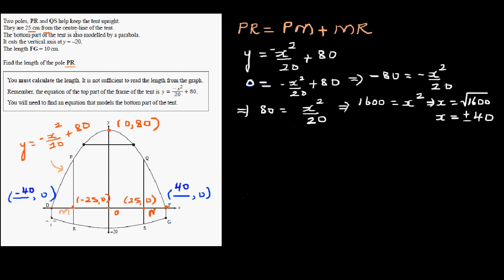The bottom part of the tent can also be modeled by a parabola. We know the minimum of that parabola is at (0, −20). We also know the length of FG is 10, and the X coordinate of G is the same as the X coordinate of F, so the coordinate of G is (40, −10).